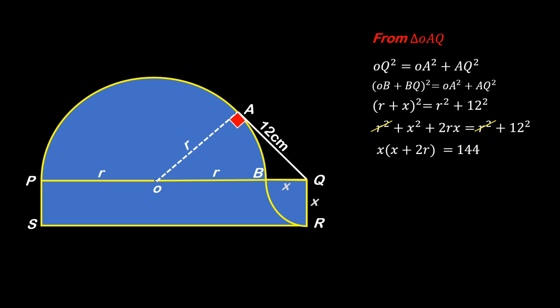So we can write this as QR multiplied by PQ, which is actually the area of PQRS, which is 144 cm², and that is the answer.